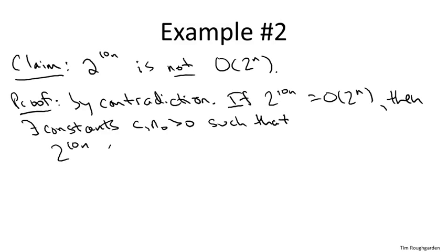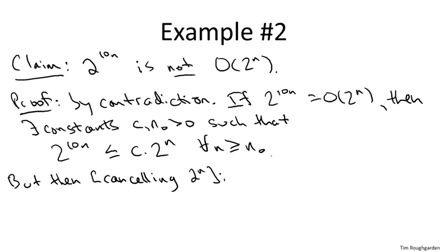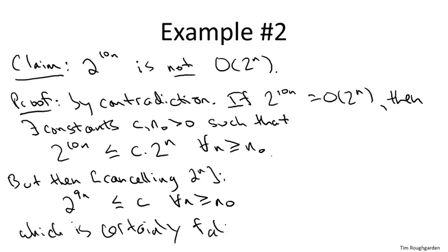To complete the proof, what we have to do is go from this assumption and derive something which is obviously false. If we divide both sides by 2^n, which is a positive number since n is positive, what we find would be a logical consequence of our assumption would be that 2^(9n) is bounded above by some fixed constant c for all n at least n_0. But this inequality is certainly false. The right hand side is some fixed constant independent of n. The left hand side is going to infinity as n grows large. So there's no way that this inequality holds for arbitrarily large n. So that concludes the proof by contradiction. This means our assumption was not the case, and indeed it is not the case that 2^(10n) is big O of 2^n.